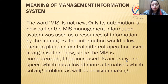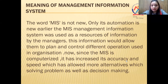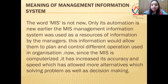Next, we go for the types of the management information system. First of all, we have to know what is basically MIS. MIS is not new in our environment. It is an automation — earlier, MIS was used as a resource of information by managers, which would allow them to plan and control different operations in the organization. Now, since the MIS is computerized, it has increased its accuracy and speed, which has allowed more alternatives in solving problems as well as in decision making.